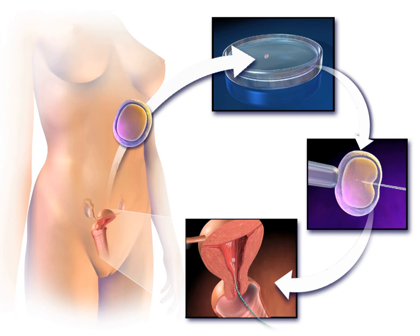ART mainly belongs to the field of reproductive endocrinology and infertility. Some forms of ART are also used with regard to fertile couples for genetic reasons. ART may also be used in surrogacy arrangements, although not all surrogacy arrangements involve ART.